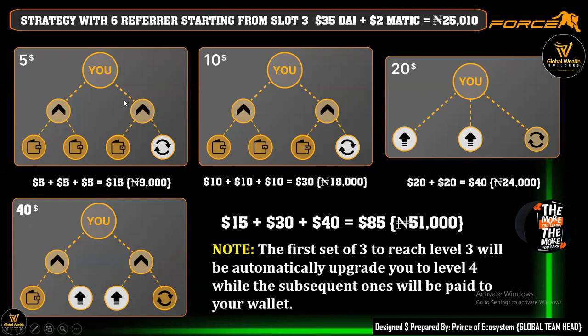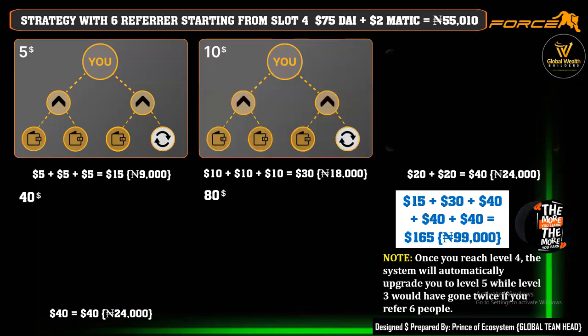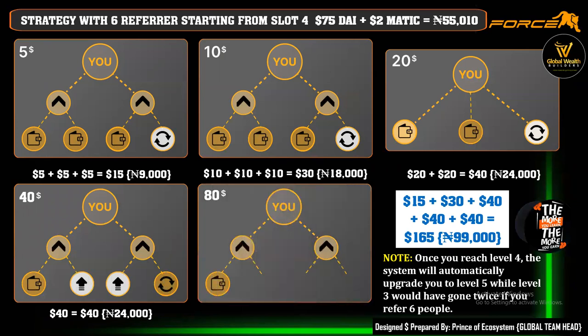By the time those six people bring their four each — the first two here just need four to start — the person comes back again. So if one of these six people brings in their four, you will earn again twice. And by the time those four bring their next four, just imagine what can happen. All of this can happen in a week. Imagine getting all of this on a daily basis — recycling all these levels one to three — the money is guaranteed to drop into your wallet.